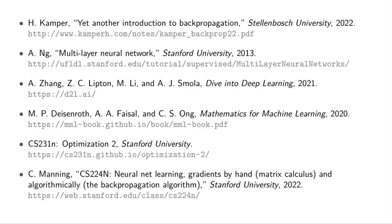The CS231N course at Stanford is a course on computer vision, but their notes on gradient descent are also really good. The graph formulation of neural networks — I really came to understand it by reading those notes.